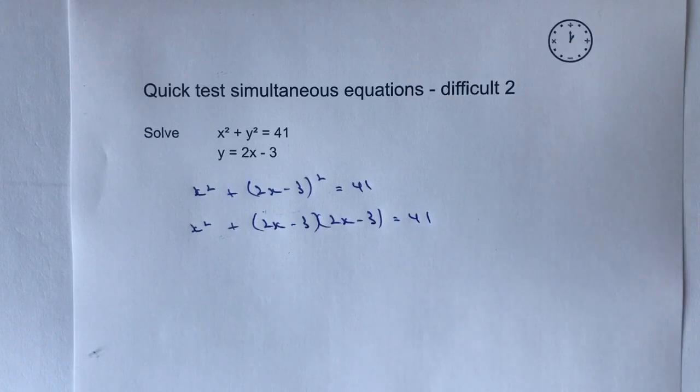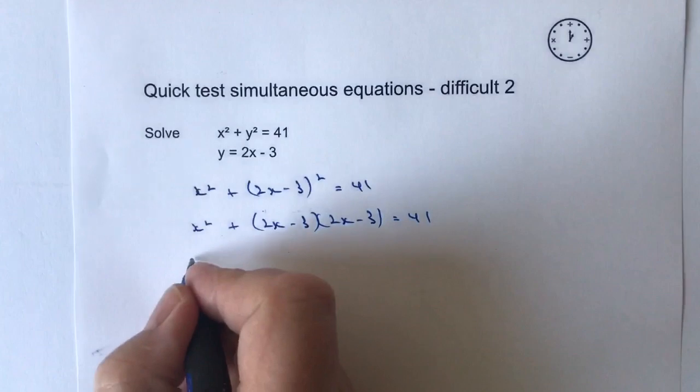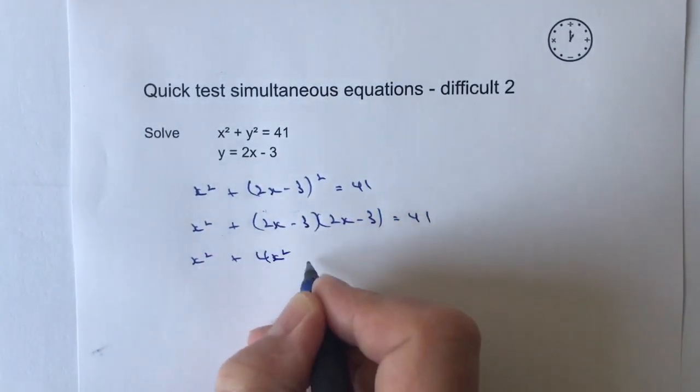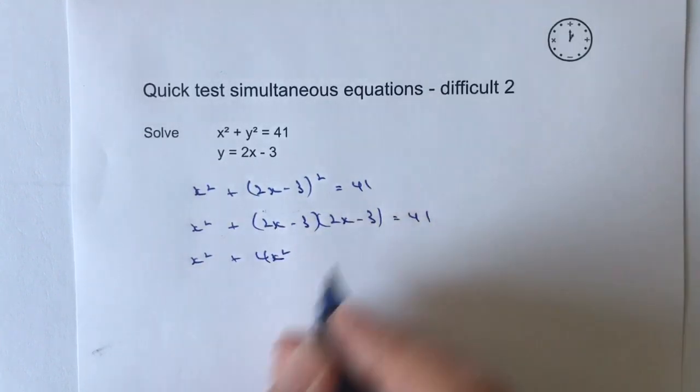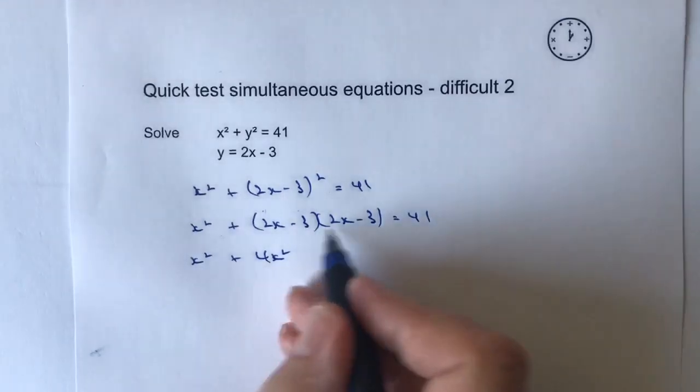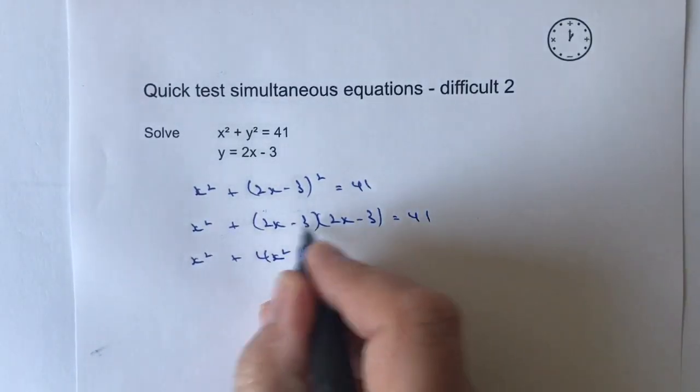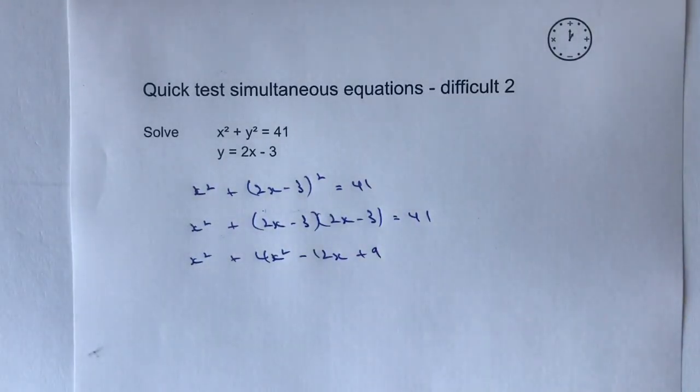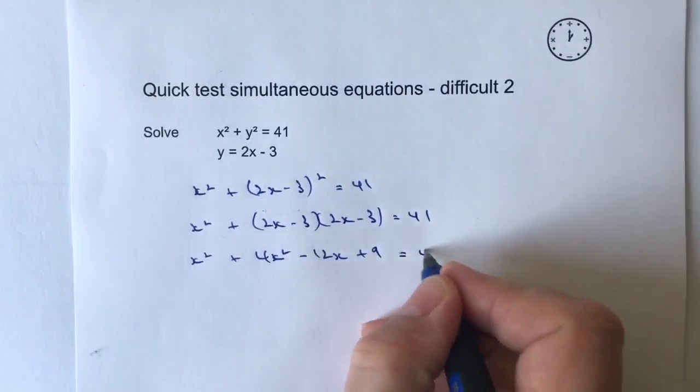Okay, so then it's a case of I can multiply out those brackets and I'm going to get x squared plus 2x times 2x is 4x squared. And I've got 2x times minus 3 is going to be minus 6x. And then I've got minus 6x again, so that's going to be minus 12x. And then I've got plus 9. If you're not sure how I've done that expansion, please do have a look at some of the other videos within the playlist and that will help you a little bit. Okay, so that equals 41.